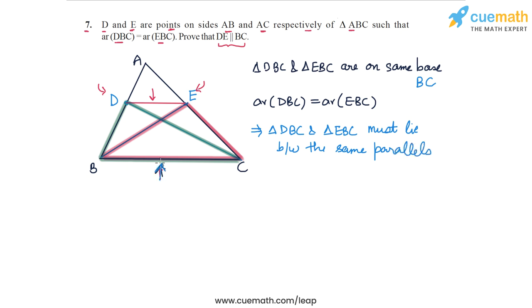Now one of those is BC, this side, because both triangles share this as the base. And the other parallel must be DE. This basically means that DE is the other parallel, or DE is parallel to BC.